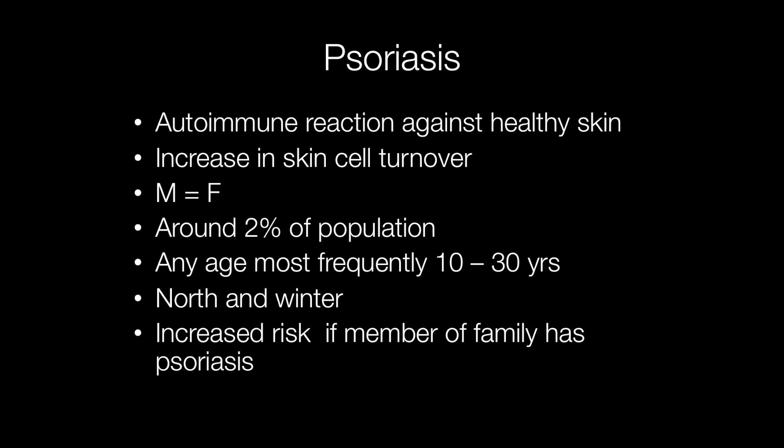Psoriasis is an autoimmune reaction against healthy skin, but the exact cause is as yet unknown, and this results in an increase in cell turnover. Psoriasis affects males and females equally and affects around 2% of the population. It typically presents between the ages of 10 and 30 but may occur at any age, with peak incidences between 20 and 30, and 50 and 60.